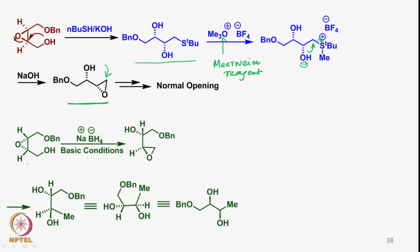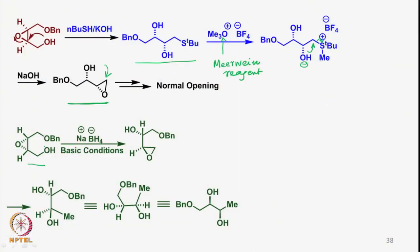If we take an epoxide of this type, sodium borohydride has been found to react with it. Under basic conditions the Payne rearrangement takes place and the anion forms opposite to the carbon-oxygen bond—this is alpha-oriented, therefore the new epoxide is now beta-oriented. When this gets reduced with sodium borohydride, this bond opens up and we get this product which can be written in the zigzag fashion.